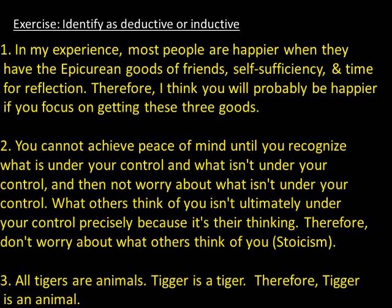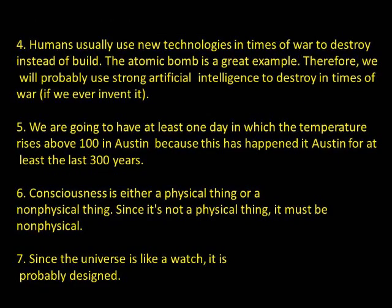Number one is inductive — 'probably' is a clue, the word probably. Number two is deductive because if we assume the premises are true, the conclusion must follow. Number three is deductive; it's impossible for the conclusion to be false if we assume the premises are true. Number four is inductive because the arguer is claiming that the conclusion probably follows, not that it must follow. Number five is inductive — an argument that generalizes from a sample is inductive because the conclusion is supported in a probabilistic way. The conclusion could be false even if we assume the premise about the sample is true.